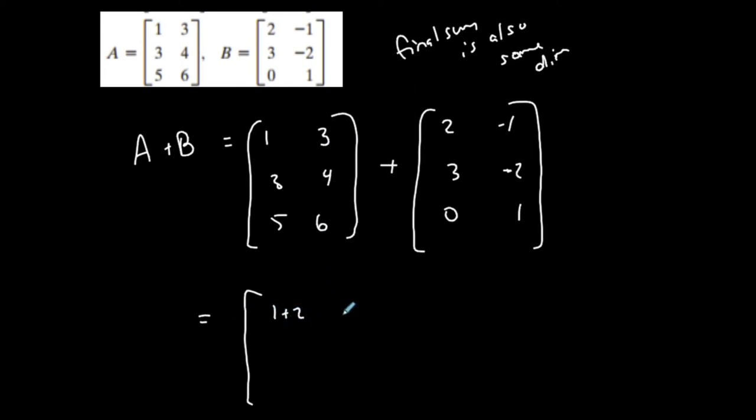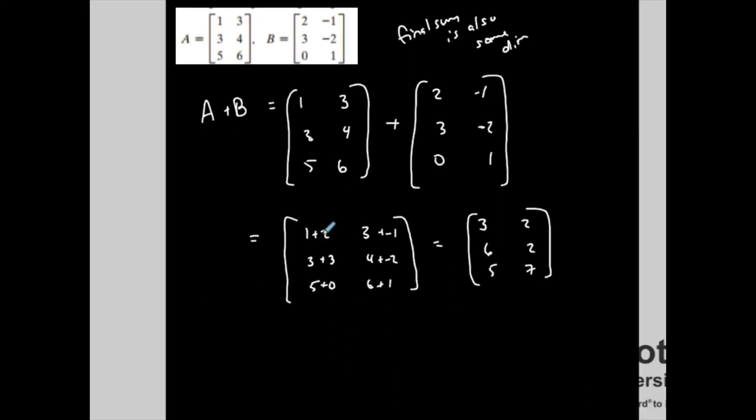The element in my final sum in row 1, column 2 is the sum of the two elements. In this case I'm basically just adding the elements in each of the same locations to get that corresponding element in the final sum. I usually don't write this out, but 3, 2, 6, 2, 5, 7 is my final sum of these two matrices.